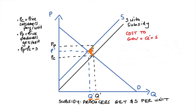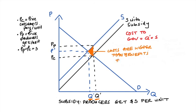We can also see this deadweight loss because producing any quantity above q* is inefficient. In the range between q* and q', the marginal benefit of consumption — how much good consumers get from those units — is actually below the true cost of production. We are producing where costs are higher than benefits. The whole reason we do economics is to allocate scarce resources well, so producing where costs exceed benefits — as the subsidy distorts the market into doing — is genuinely inefficient, and that's why it's deadweight loss.